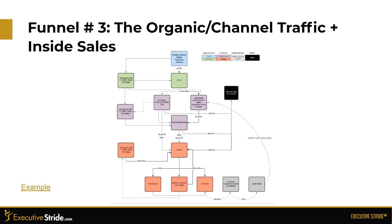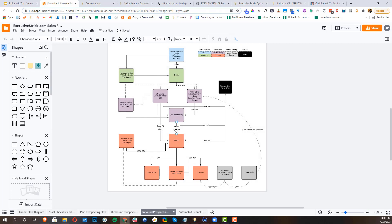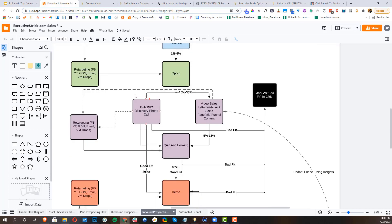Here is the organic channel traffic inside sales funnel example. Similar to the other funnels, we start with our traffic source — content, social media, podcasts, articles — with a 1 to 5 percent conversion rate to the opt-in. We have retargeting on the left. From there we're either going to a 15-minute discovery call, a video sales letter, a quiz and booking, or straight to the demo.